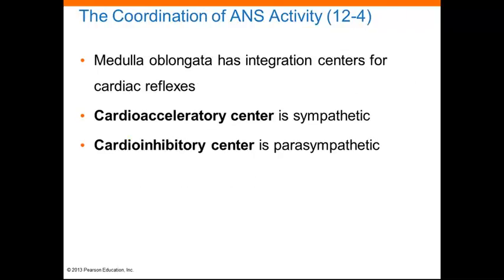The cardiac centers of the medulla oblongata contain the autonomic headquarters for cardiac control. The cardioacceleratory center controls sympathetic motor neurons that increase heart rate, and the nearby cardioinhibitory center controls the parasympathetic motor neurons that slow heart rate. Sensory information concerning cardiovascular status arrives at the cardiac centers via the vagus nerves and sympathetic nerves of the cardiac plexus. These cardiac centers can also be influenced by higher brain centers, especially the hypothalamus, which explains why changes in emotional state can impact heart rate.